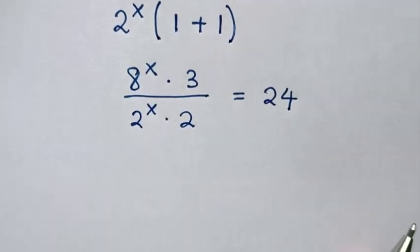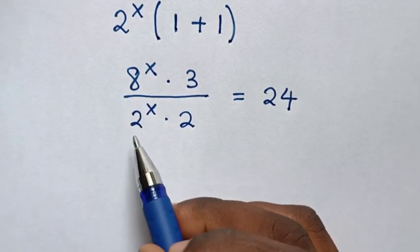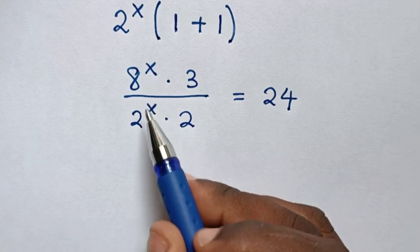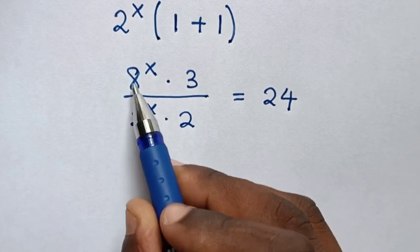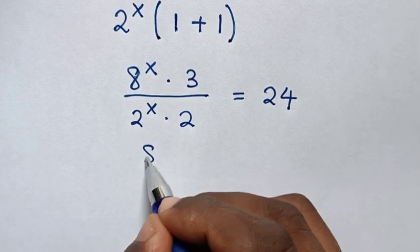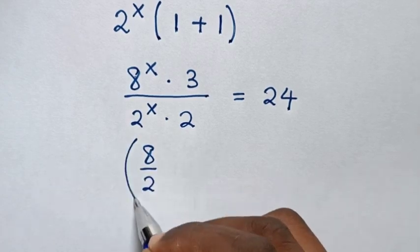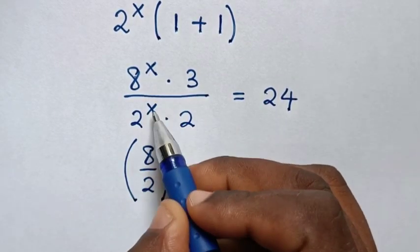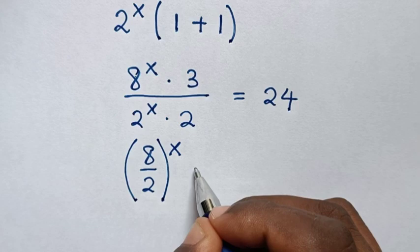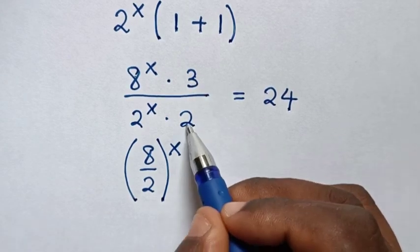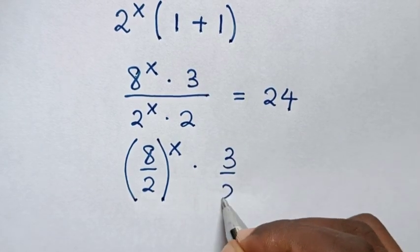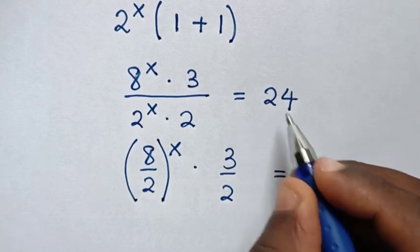Then in next step, from here 8 power x divided by 2 power x, power of x is common. So it will be 8 divided by 2, power x, times 3 over 2. Then is equal to 24.